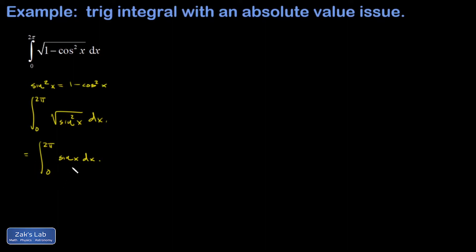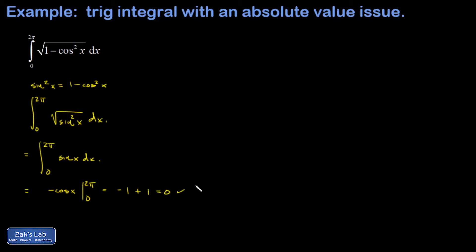There are a couple of ways to argue what happens next. The sine function spends half its time above the x-axis and half below on each period, and we're integrating over exactly one period, so this has to come out to zero. For a more formal argument, we guess the antiderivative and evaluate across the endpoints: plugging in the upper limit gives negative one, then subtracting what we get at the lower limit gives zero.